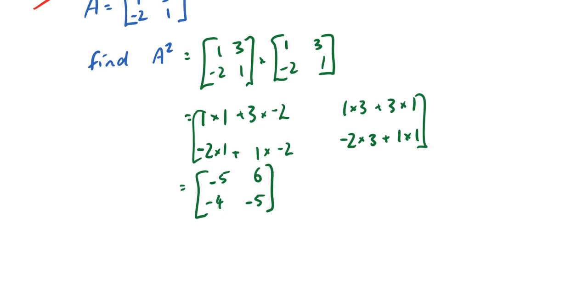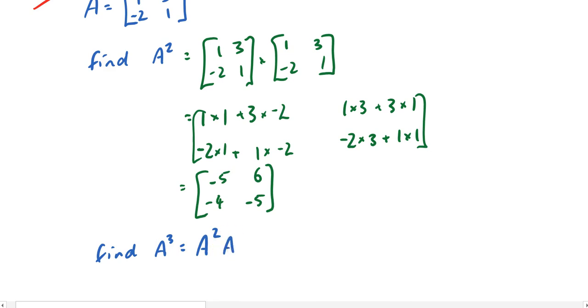Now if the question instead was find A to the 3, then that's going to be equal to A squared times A. So unfortunately there's no fast way to do this.